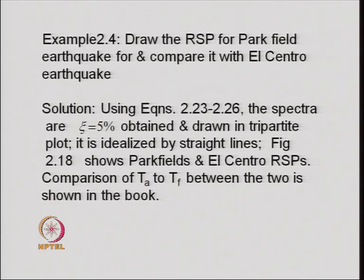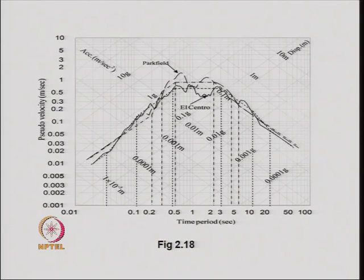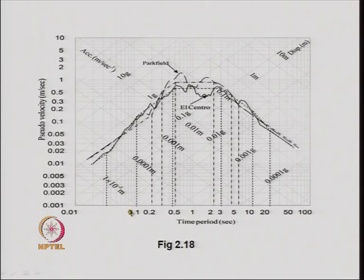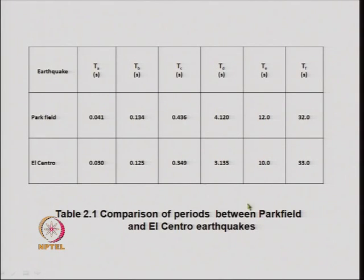An exercise was carried out to show that different earthquake records provide the same kind of idealized response spectrum on a tripartite plot. For the Parkfield earthquake and for the El Centro earthquake, the idealized response spectrums were compared. When idealized with straight lines, they nearly had the same kind of features, with only the T values at different points differing.